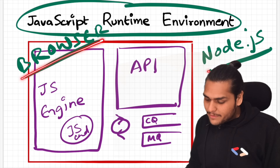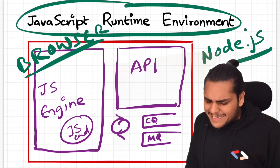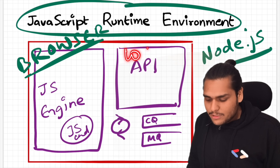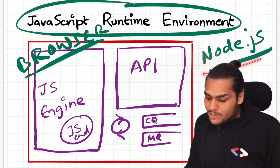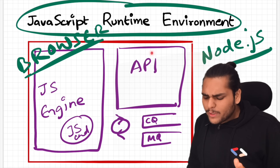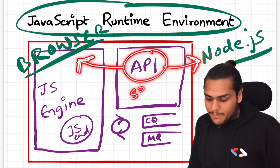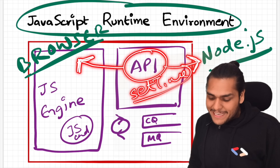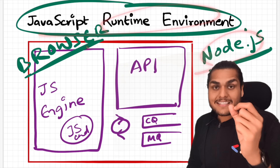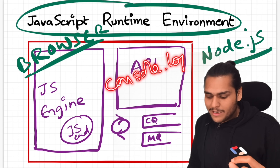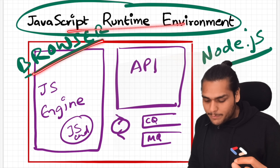The APIs are different in the case of the browser and different in the case of Node.js, and sometimes they are common. For example, the JavaScript runtime environment inside the browser has an API known as local storage that gives us the superpower of accessing local storage from our code. In Node.js it could be different. There are also APIs with the same name present in both — for example, setTimeout and console.